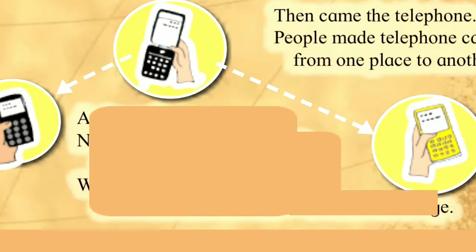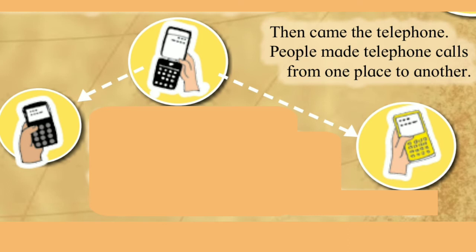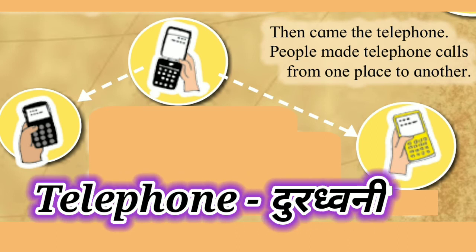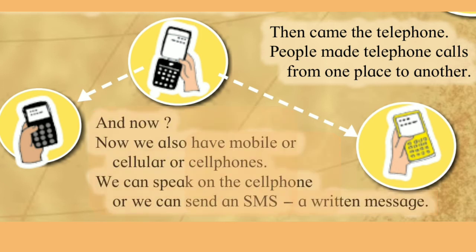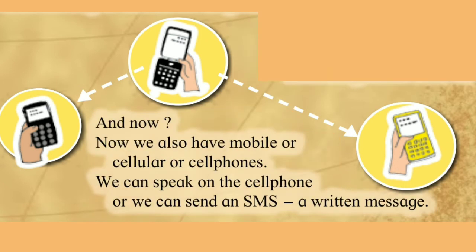Then came the telephone — nantar telephone, durdwani ala. People made telephone calls from one place to another — eka thika na hun dusriya thika ni telephone ni sampar ka saadha ta sat.